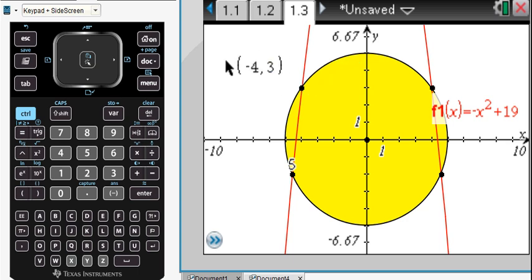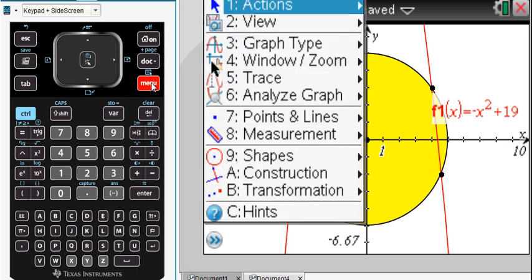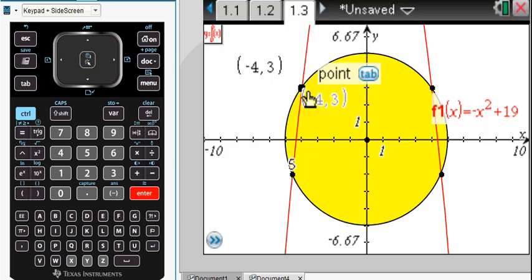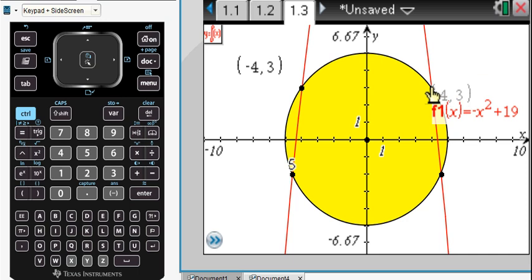Now whatever you can do from a right click, you can also do by pressing menu. So menu, action, and there is the coordinates and equation. Then all I have to do is I go around and I click which one I want to do. Click that one and click this one. And what's nice about this is it becomes quite dynamic.